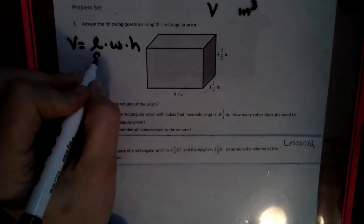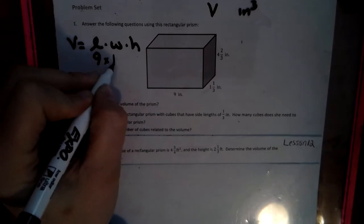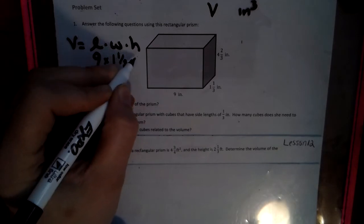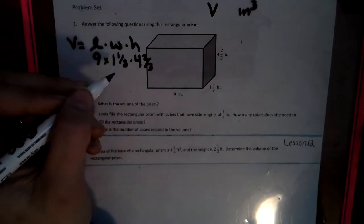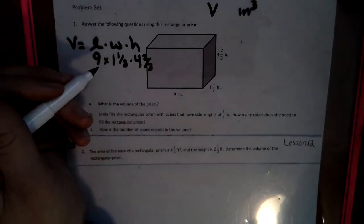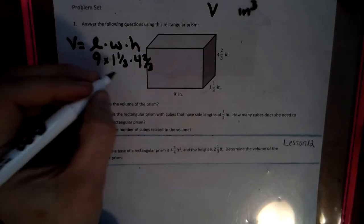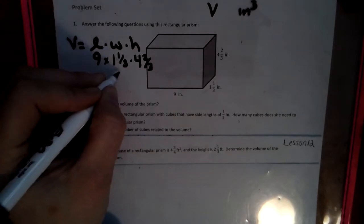So length, we have 9. Width, we have 1 and a third. And height, we have 4 and two thirds. Now, if these were fractions that I could easily make into decimals, I would be in the decimal world before I hung out in the fraction world. But either way, I still have to make improper fractions.